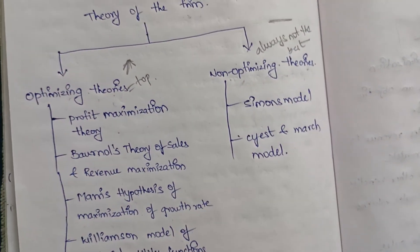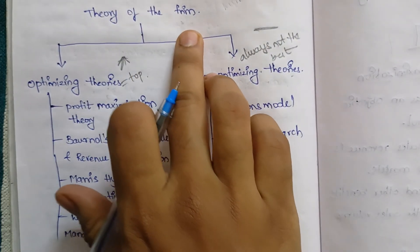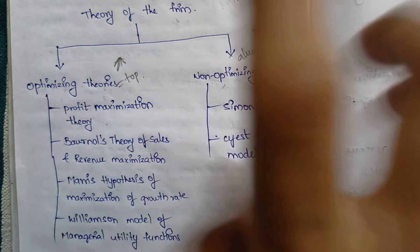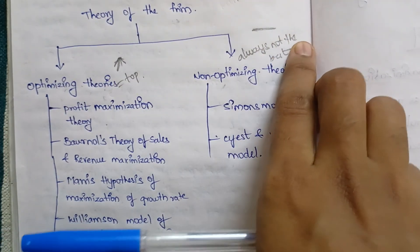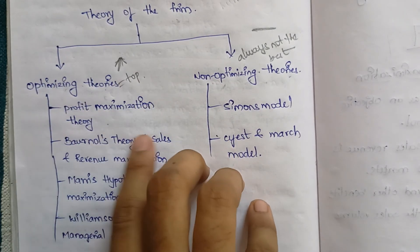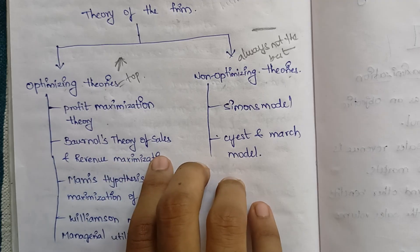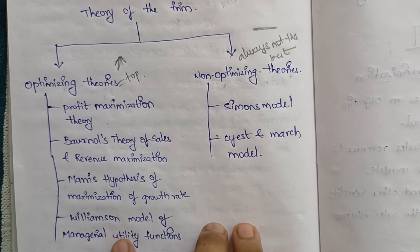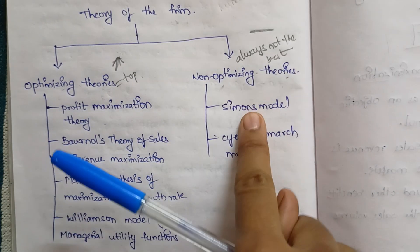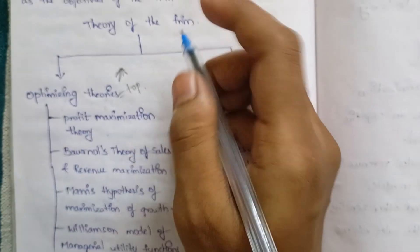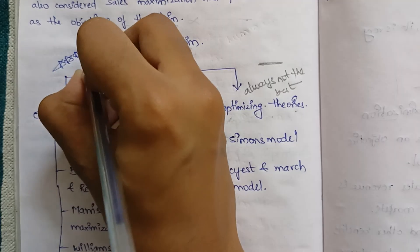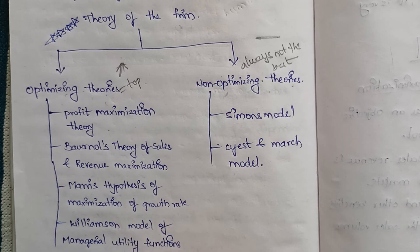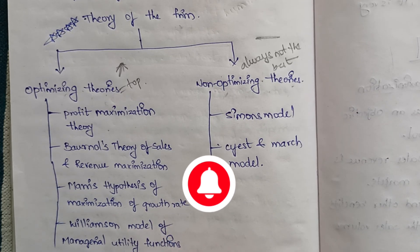Once again, to summarize: the theory of the firm includes optimization theory and non-optimization theory. Optimization theory means always trying to be the best — it includes profit maximization theory, Baumol's theory of sales and revenue maximization, Marris's hypothesis of maximization of growth rate, and Williamson's model of managerial utility function. Non-optimization theory includes Simon's model and Cyert and March model. This is a very important topic. Thank you — for more videos, subscribe to my channel.